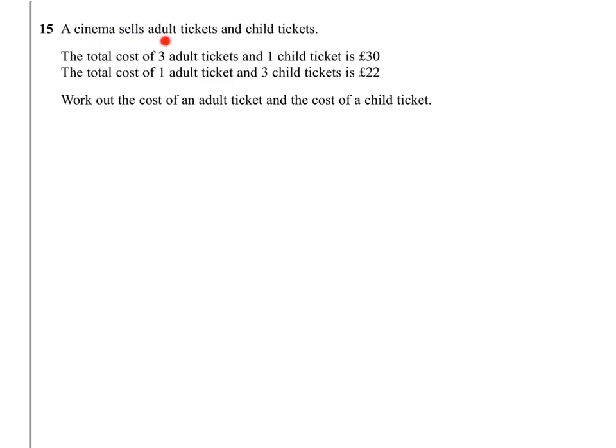Question 15. A cinema sells adult tickets and child tickets. The total cost of three adult tickets and one child ticket is £30. The total cost of one adult ticket and three child tickets is £22. Work out the cost of an adult ticket and the cost of a child ticket.